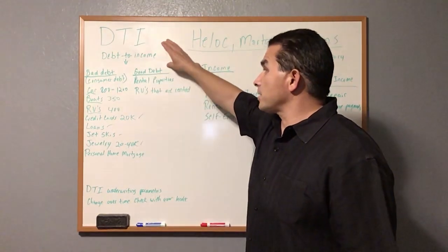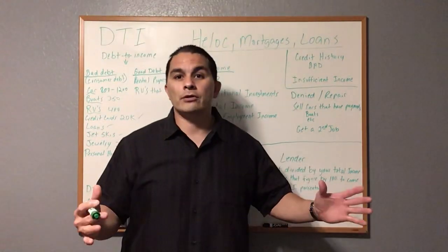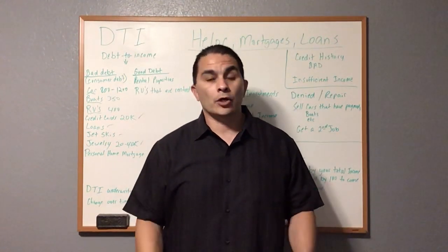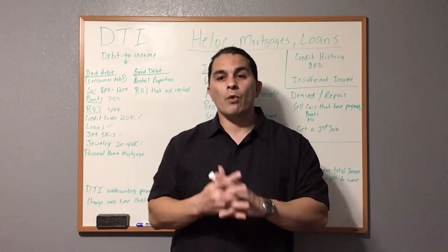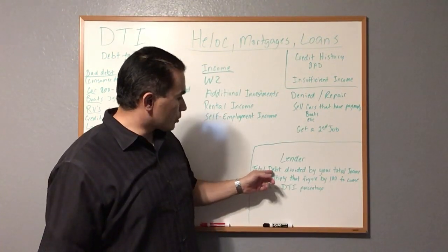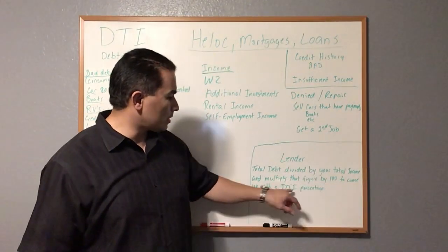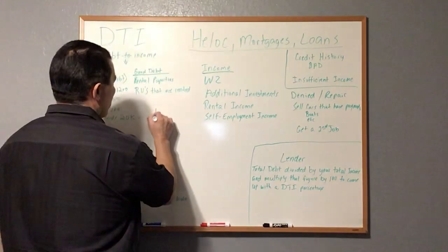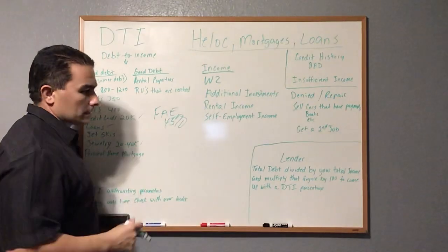Right now we're talking about your debt-to-income ratio. The way lenders calculate it: take your total debt, divide it by your total income, and multiply by 100 to get your DTI percentage. Different lenders — your bank, a credit union, a mortgage company — all have different requirements. For example, one lender may use a 45% DTI threshold.